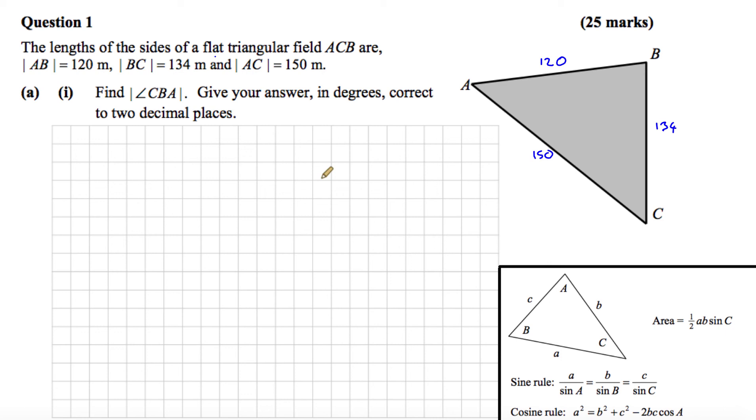Part A1 says find the size of the angle CBA. So the size of angle CBA, that's this angle here, C to B to A. We have to give our answer in degrees correct to two decimal places.